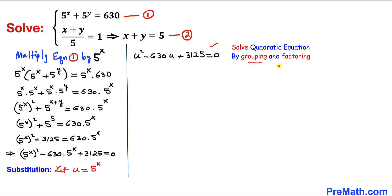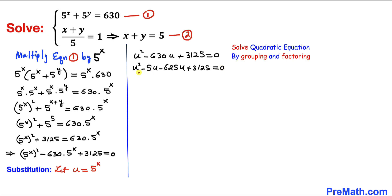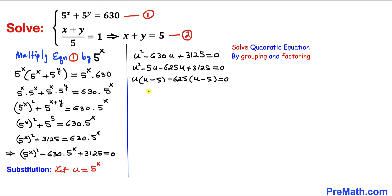We are going to solve it by grouping and factoring. We can write the middle term as negative 5u minus 625u, giving us u^2 minus 5u minus 625u plus 3125 equals zero. Factoring u from the first two terms and negative 625 from the last two gives u(u minus 5) minus 625(u minus 5) equals zero, so (u minus 5)(u minus 625) equals zero.